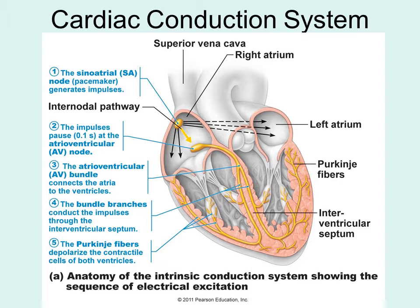The SA node contains specialized cells that trigger the electrical impulse, which then moves across the right atrium and passes to the left atrium. Then, after a slight delay, the electrical impulse will come and stimulate the AV node — the atrioventricular node.